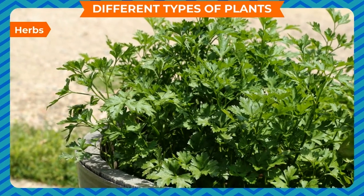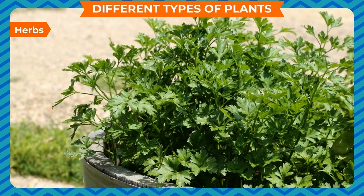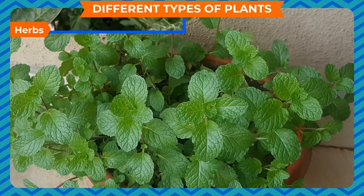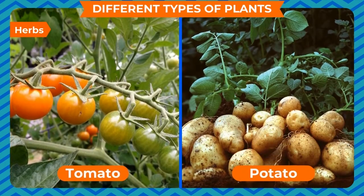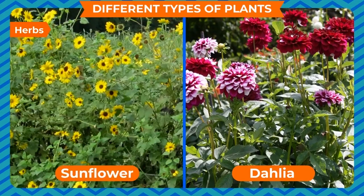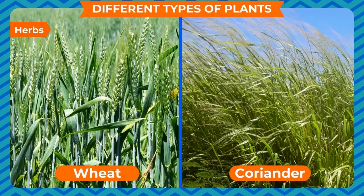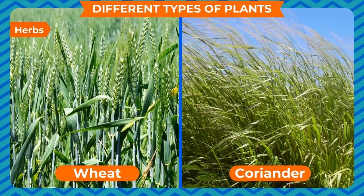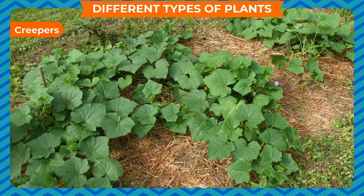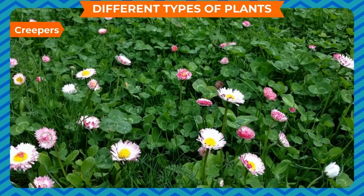Shrubs have many small branches which grow close to the ground. HERBS: Some plants have a very weak, small, green and tender stem. They are called HERBS. They live only for a few months. Tomato, Potato, Mint, Dahlia, Sunflower, Grass, Wheat, and Coriander are HERBS.